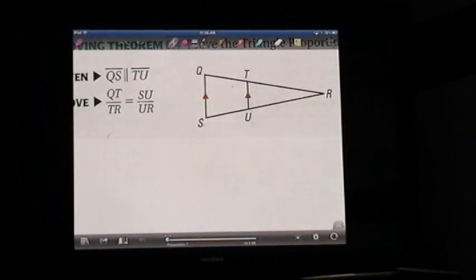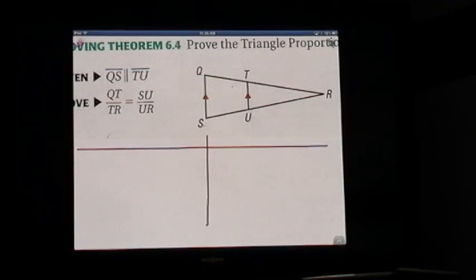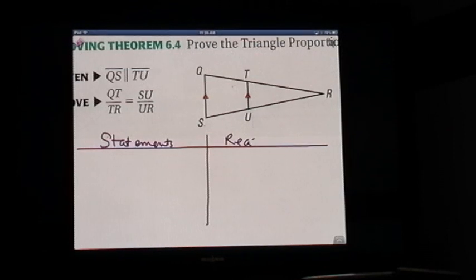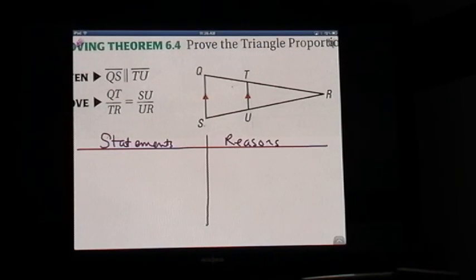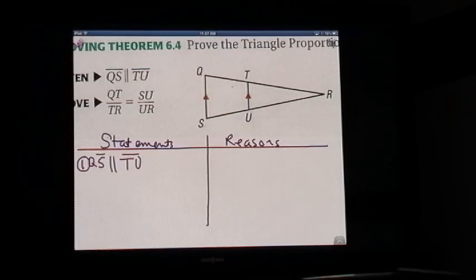This is going to be a two-column proof, and I hope that you have copied the diagram, statements, and reasons. To get credit for this, you need to write down what I've got. You should have had the part that you're to prove and the part that you were given. You always start with the given statement. The given statement is that QS is parallel to TU, and that is given.